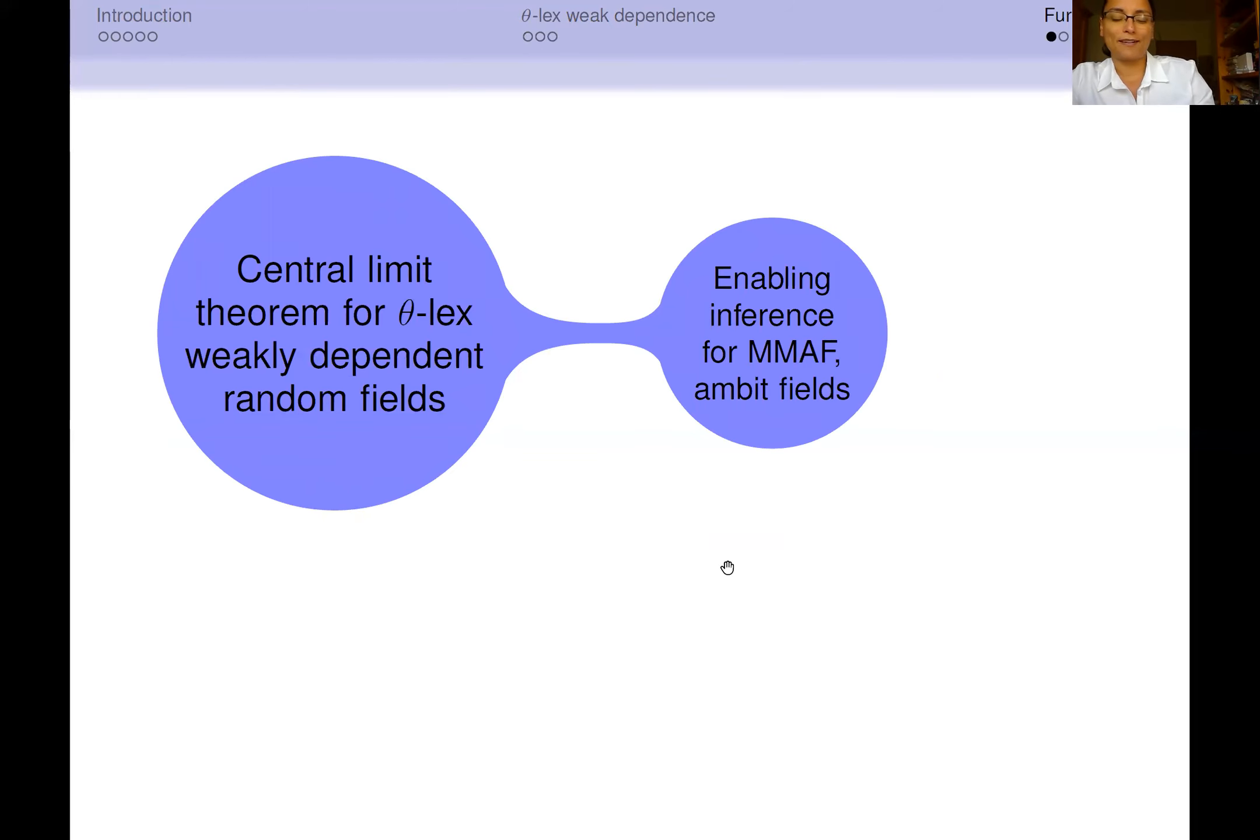To conclude, in the paper is also present a very detailed proof of the central limit theorem for θ-lex weakly dependent random fields. Moreover, it is given precise computation of the weak dependence coefficients for mixed moving average fields and ambit fields. We also analyzed the sufficient conditions that allow to prove the asymptotic normality of the sample moments of these fields.